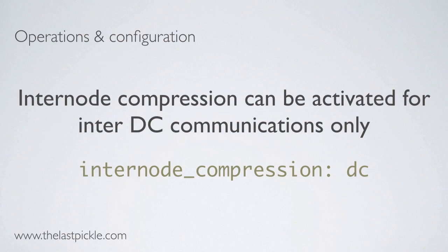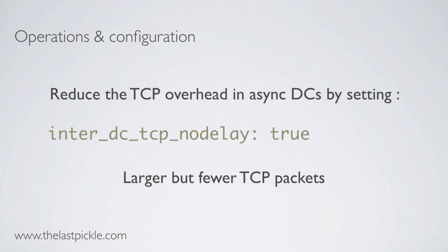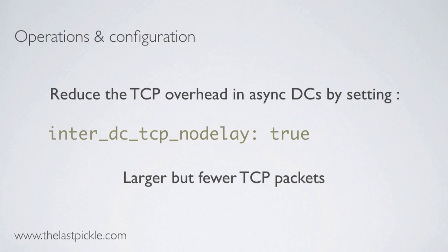The same goes for compression — compression will save you bandwidth but has overhead in CPU usage. For the same bandwidth concerns, you might want to enable compression on inter-DC communications. And you can reduce TCP overhead in eventually consistent DCs by setting inter-DC TCP no delay to true, which will send larger TCP packets but fewer of them.